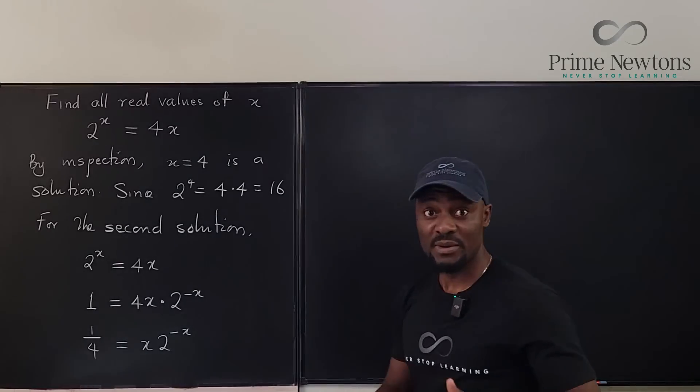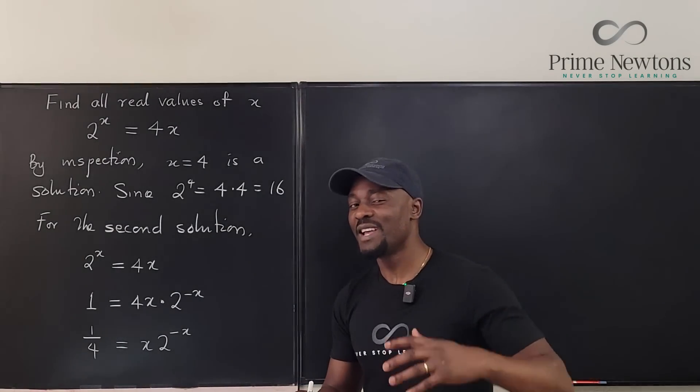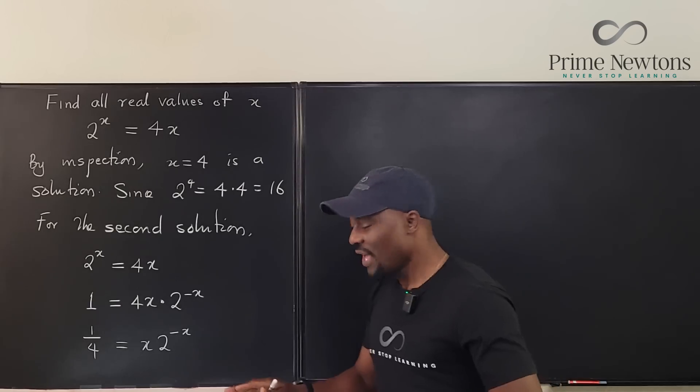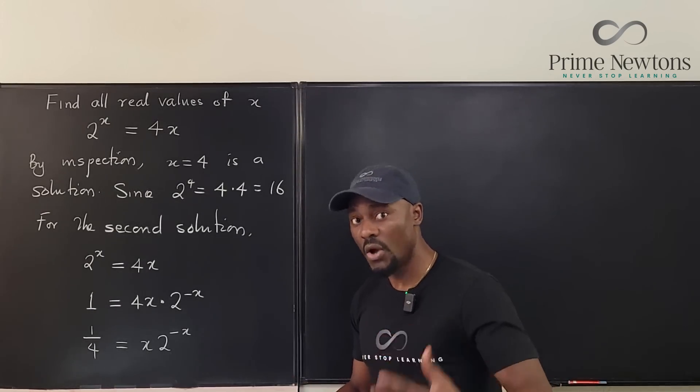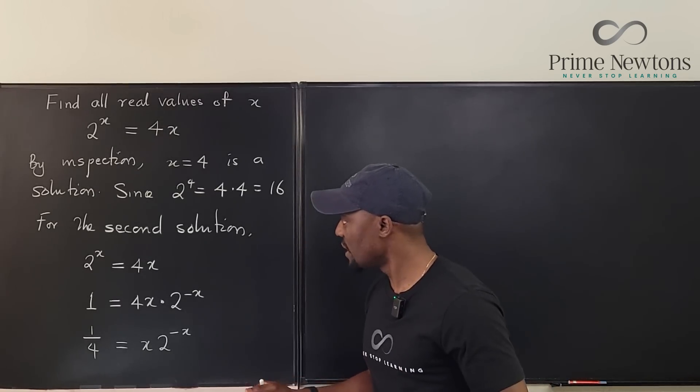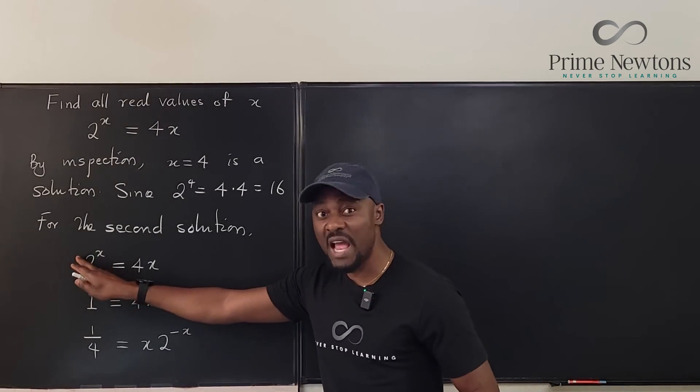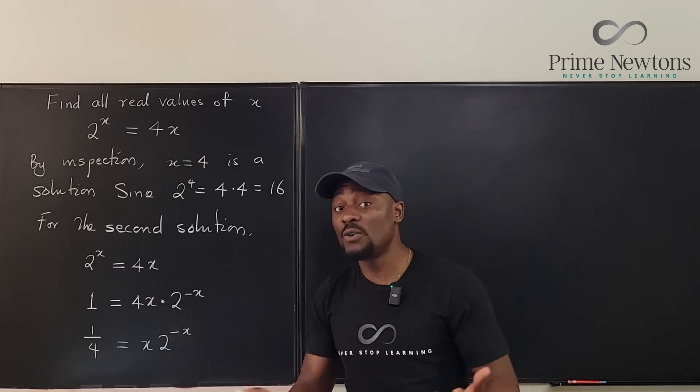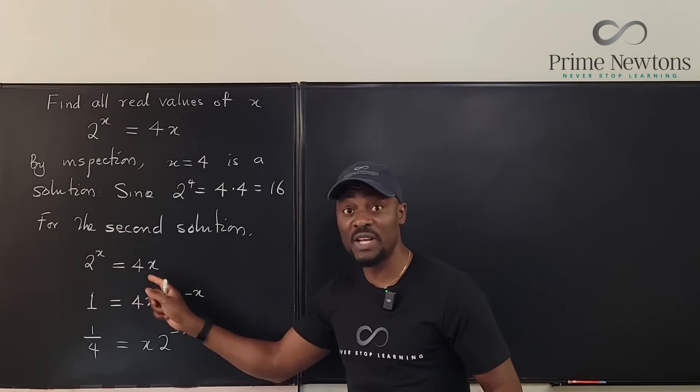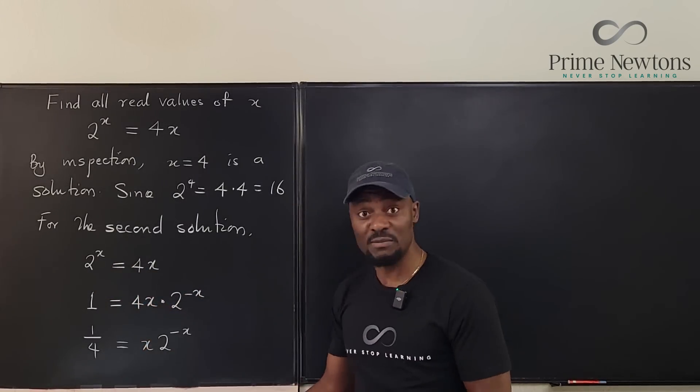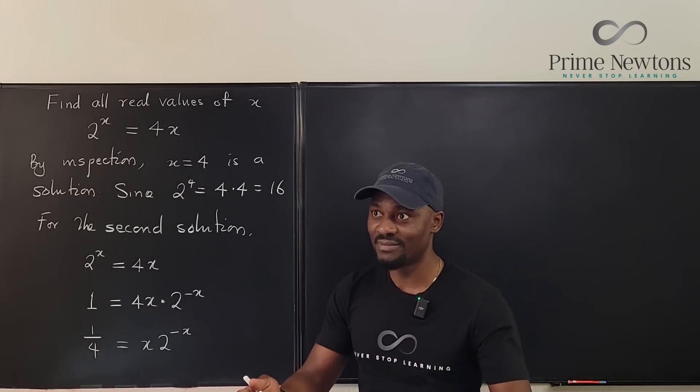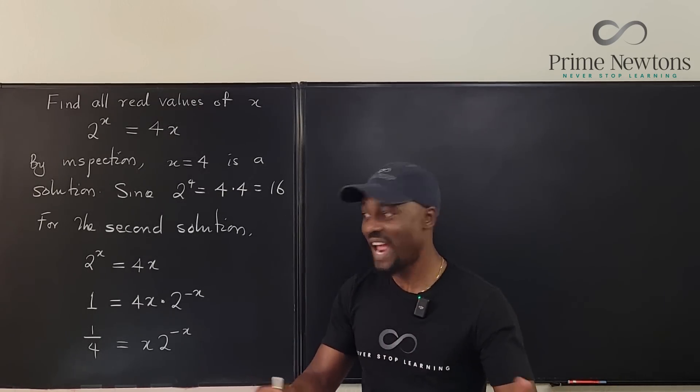So I have 1 over 4 equals x times 2 to the negative x. If you're just watching this Lambert W function type of video for the first time, there's a special function that helps us solve a product log, especially when you have a situation like this where you have an exponential function combined with a linear function. No matter how good your algebra is, you can't isolate x. You will have to use the special function, but the special function has a special condition. And this is the condition.